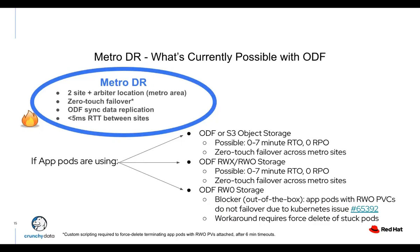There is one known community issue: if an application pod is mounting an RWO volume and you fail the node it's on, the Kubelet loses status of that volume — it thinks it's still connected and will not release it. You get a multi-attach error. The current workaround requires a forced delete of that pod to allow it to recreate on an active site.